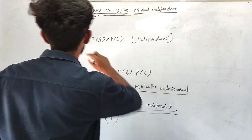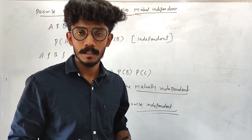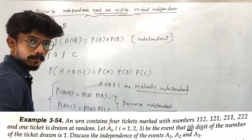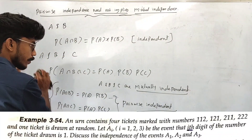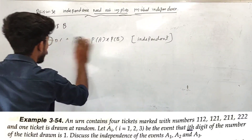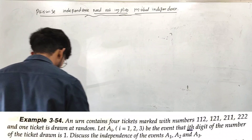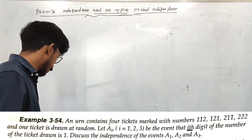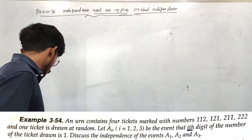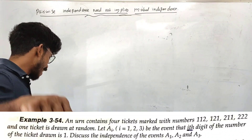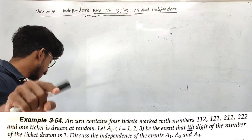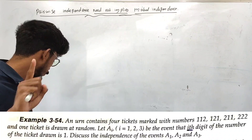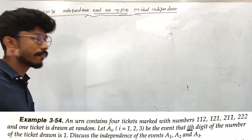To prove that pairwise independence does not imply mutual independence, we use a counter-example. Consider a container with tickets marked with numbers 100 to 999 — three-digit numbers. One ticket is drawn at random. Let A_i, for i equal to 1, 2, 3, be the event that the i-th digit of the number on the drawn ticket is 1. Discuss the independence of events A1, A2, A3.